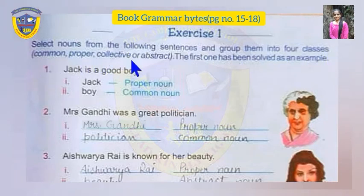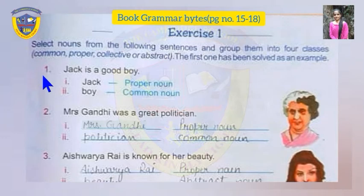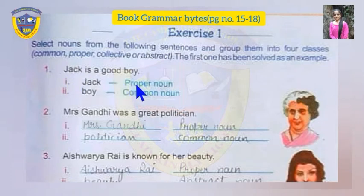The four classes are: Common, Proper, Collective, or Abstract. The first one has been solved as an example. In this exercise, you have to first find out the noun words from each sentence and then state its type. As in the first sentence, the words 'Jack' and 'boy' are the nouns. Jack is a proper noun and boy is a common noun.